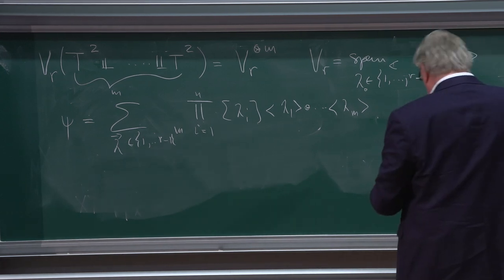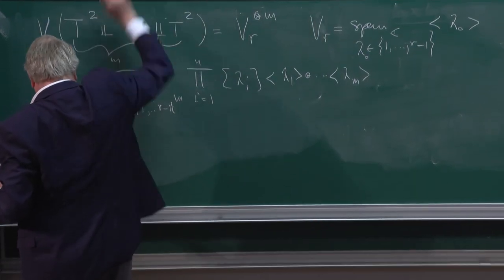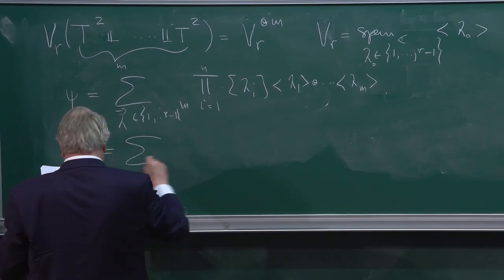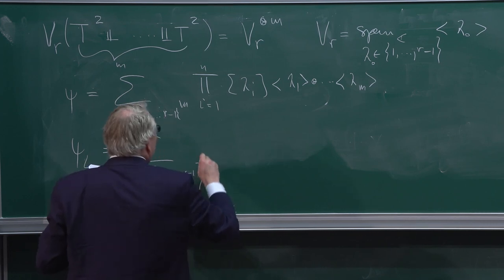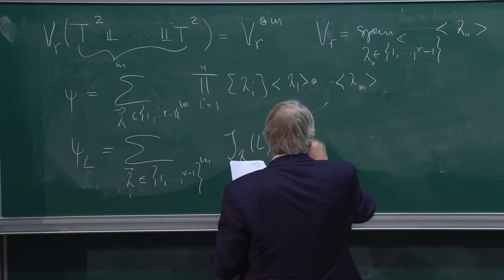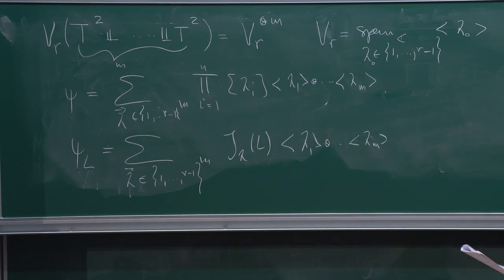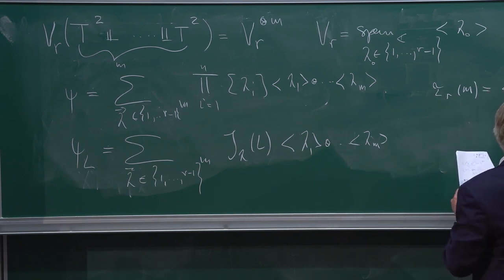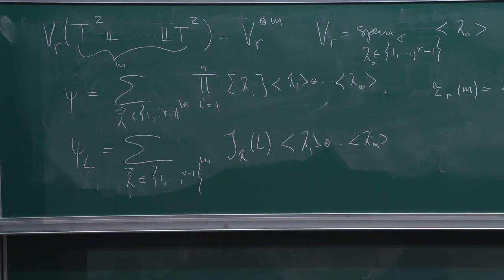There is a standard vector and a complicated vector. The complicated vector is indexed by (r−1)^m, and it is where you take the colored Jones polynomials and make them the coefficients of another vector. Then τ_m is just the inner product, or a bilinear pairing, between these two vectors.